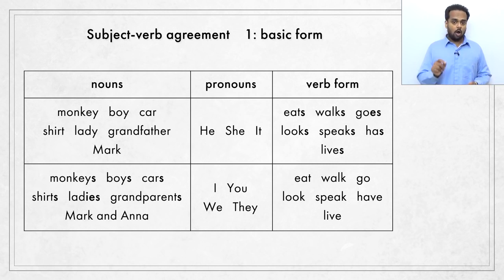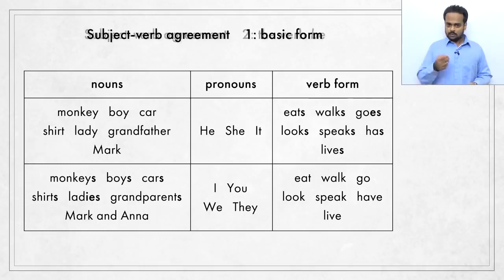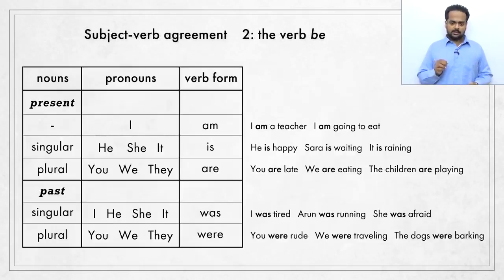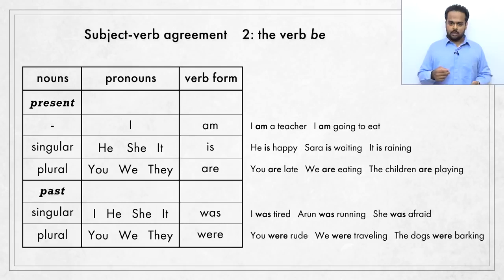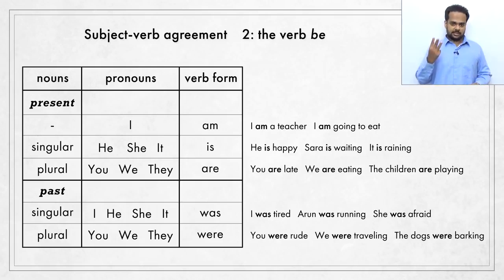Actually, this rule works for all verbs except one — the verb 'be.' The verb be has its own subject-verb agreement rules. You know that verbs in English have two present tense forms — eat/eats, walk/walks — and one past tense form — ate, walked. But the verb be has three present tense forms: am, is, and are. It also has two past tense forms: was and were.